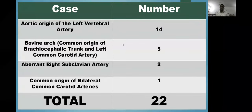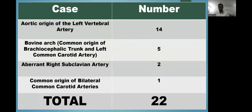Out of a total of 22 cases, 14 were that of aortic origin of the left vertebral artery, five were that of bovine arch, two were that of an aberrant right subclavian artery, and one was a common origin of bilateral common carotid arteries.